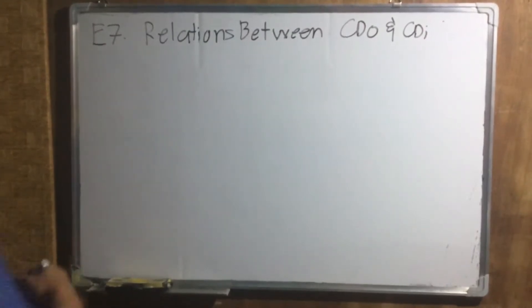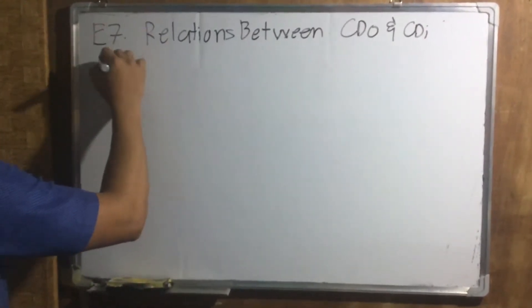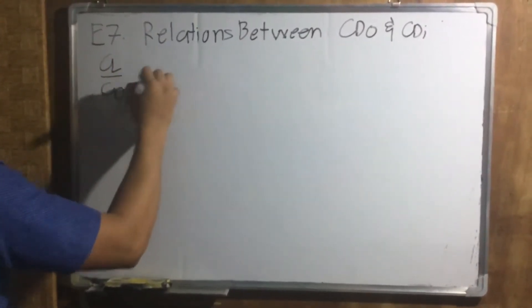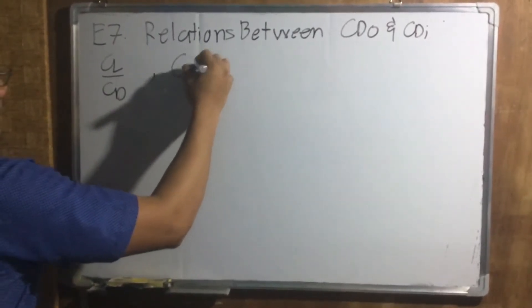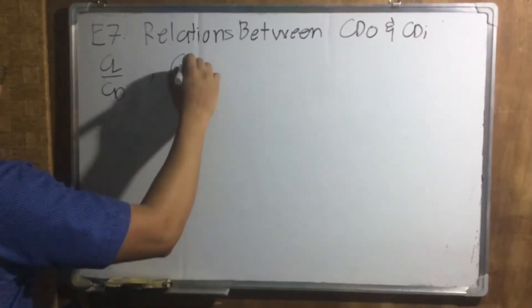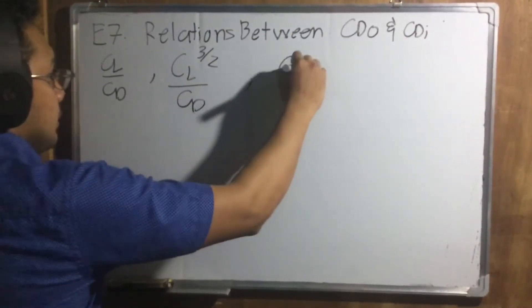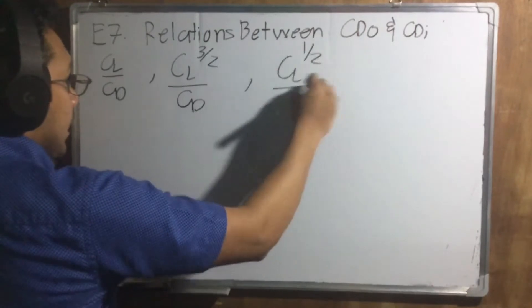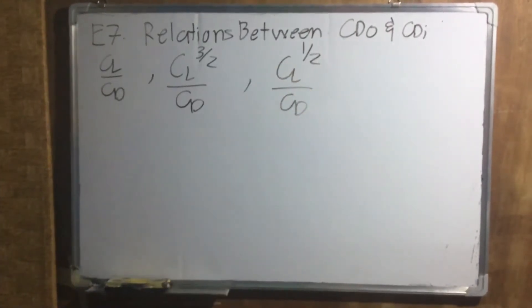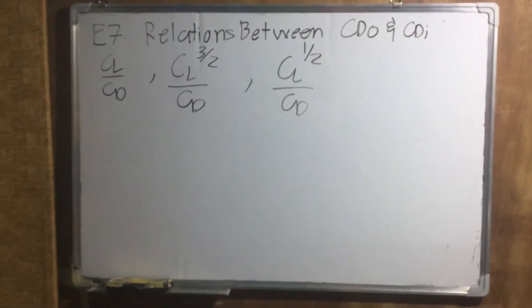And what are those ratios? First is CL over CD. Next is CL three halves over CD. And last is CL one half over CD. That's what they depend on.